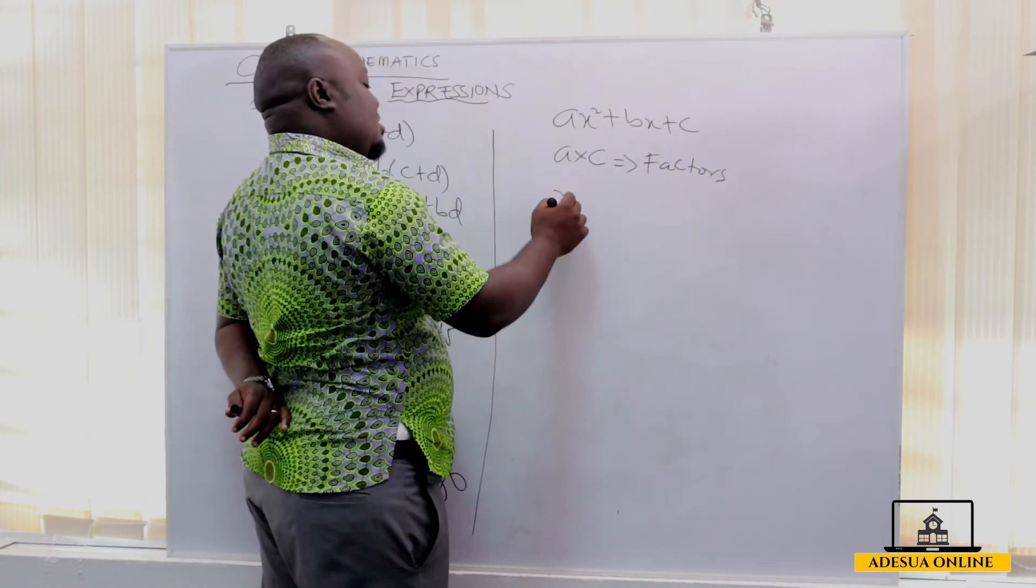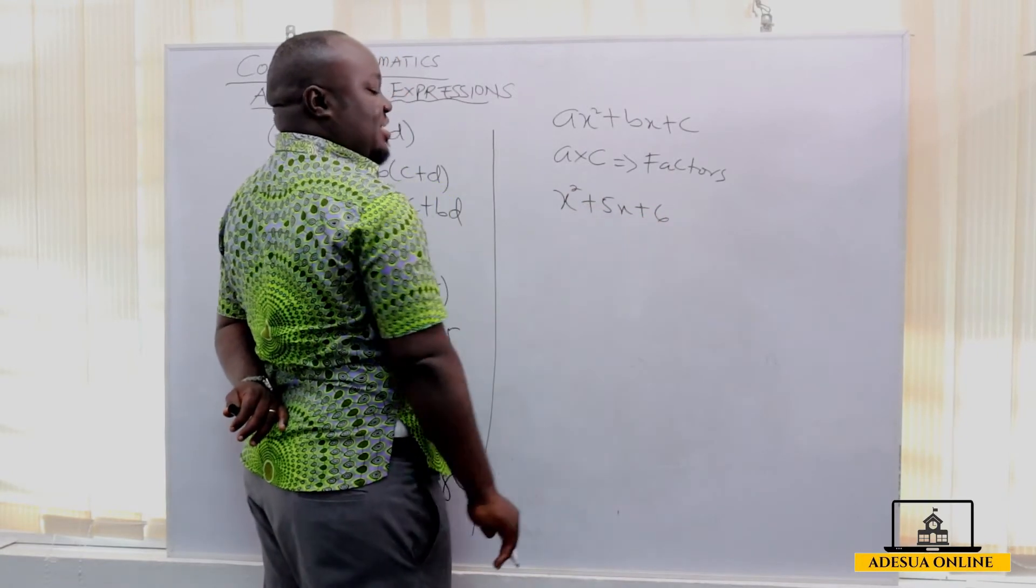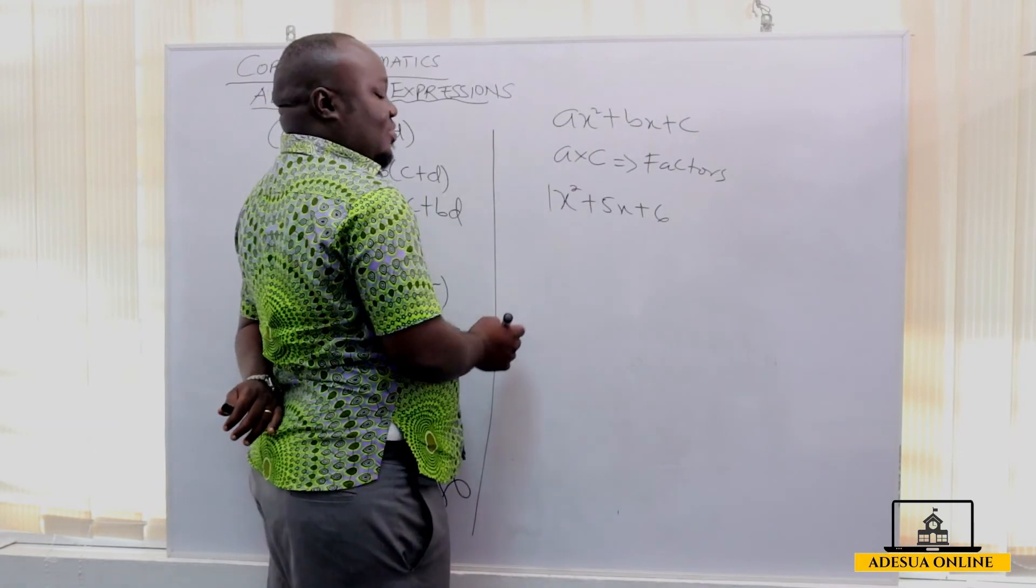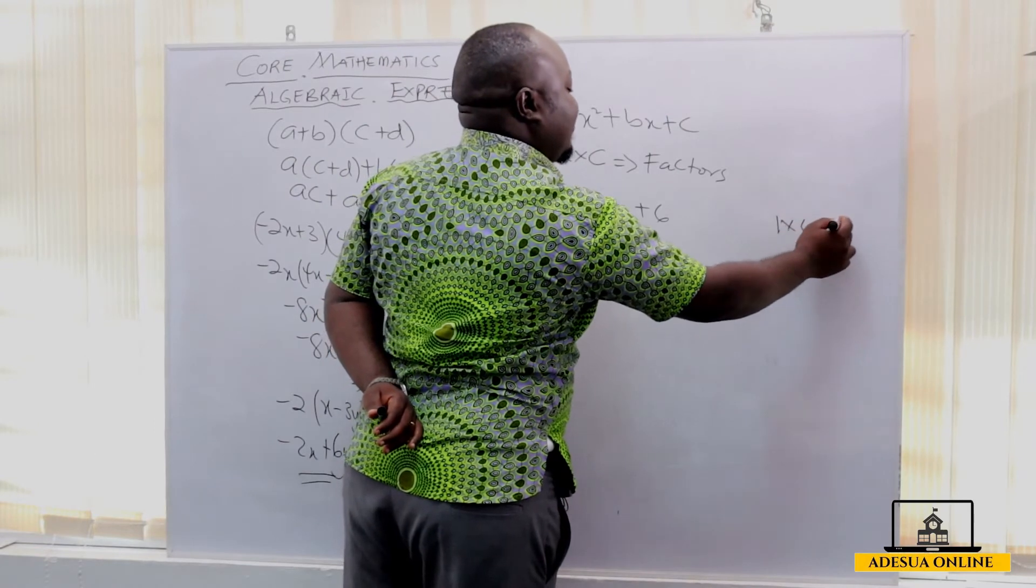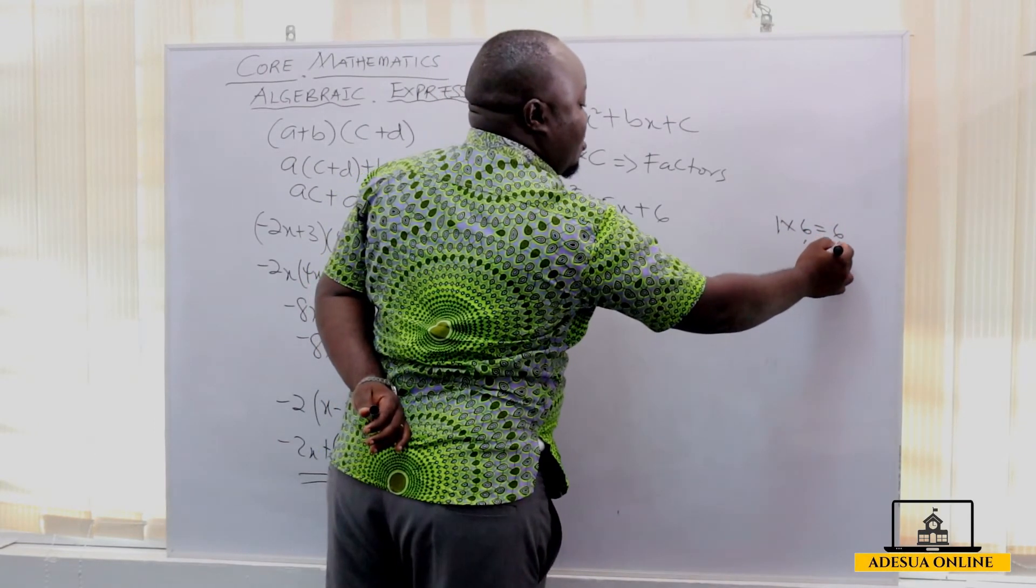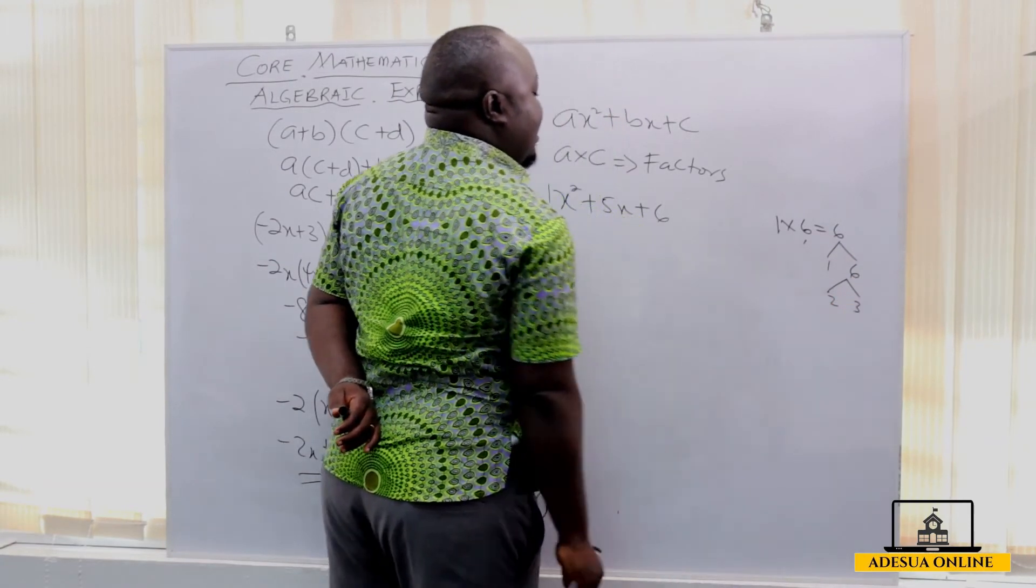So assuming I'm given x squared plus 5x plus 6 to factorize. Now, the coefficient of x squared over here is 1. So 1 times 6 is going to give us 6. Factors of 6, I can have 1 and 6, 1 times 6, I can also have 2 and 3.